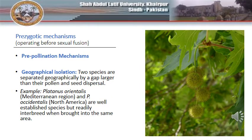The first barrier that operates before pollination is geographical isolation, which refers to physical barriers that keep two species apart. Under this mechanism, two species inhabit two different geographical regions, and the distance between them is greater than their pollen and seed dispersal range, making it impossible for them to pollinate each other. A good example is two species of sycamore trees growing in two different regions.